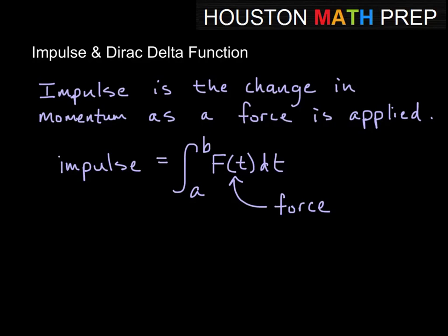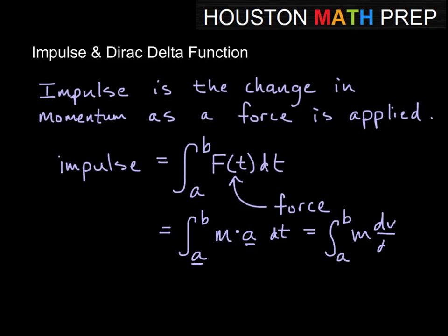Another way to write this: since force equals mass times acceleration, we can split F(T) into mass times acceleration — noting this A is acceleration, not the bound. Since acceleration is change in velocity, we get the integral from A to B of M times the derivative of velocity with respect to time, dT. That gives us MV(T) evaluated from A to B.